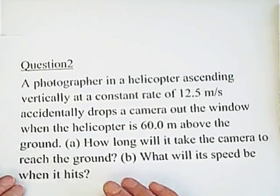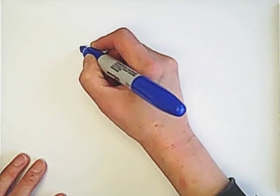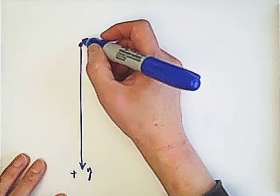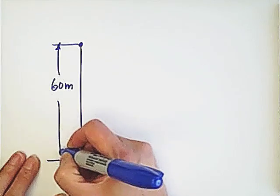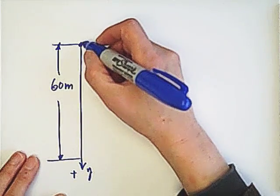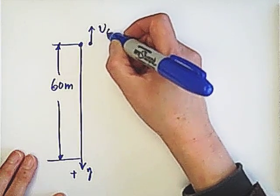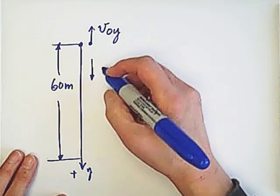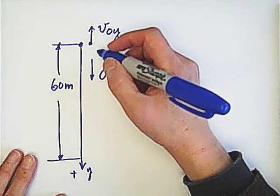So we can draw a picture. Let's set downward as the positive y direction. This is the place the camera is dropped, which is 60 meters above the ground. The initial velocity is upward, but the acceleration is downward because gravity always acts downward.